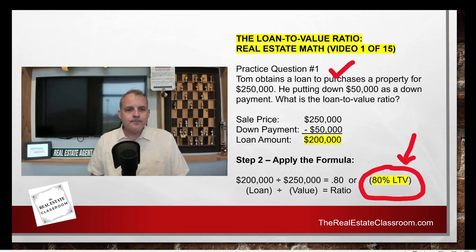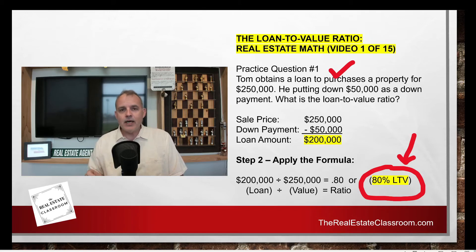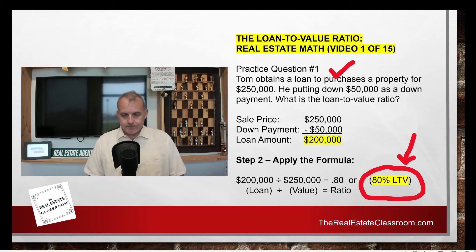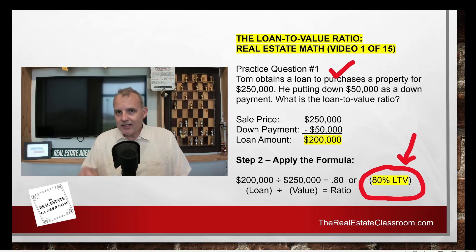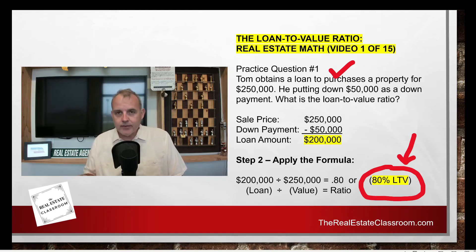Step two: we take the loan. Remember the formula is loan divided by value equals ratio. In this case, we take the loan amount or the debt, which is $200,000, and divide it by the value or the purchase price, which is $250,000. That gives us 0.80, or when expressed as a percentage, 80%. So the loan to value ratio is 80% LTV.